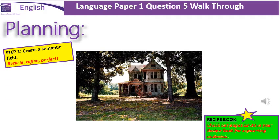This is the first step of your planning. You've got the image and the first thing you need to do is create a semantic field — choose words and phrases that spring to mind when you are looking at the image. Remember to recycle previous descriptions; you don't need to start from scratch all of the time. Think about any golden examples or golden openings that you've used and recycle them, making them fit this image. Also check out pages 22 to 30 in your recipe book for further support and materials.